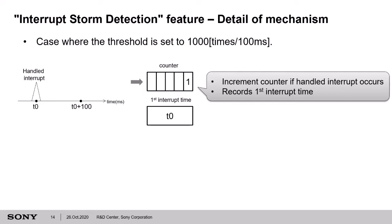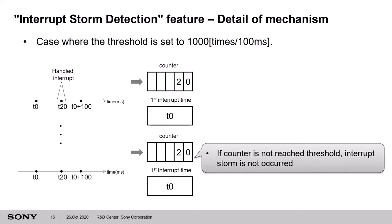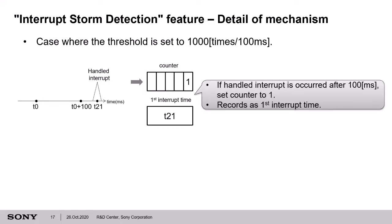In this case, the user sets 1000 as the threshold. The first handled interrupt occurs at T0. The counter is incremented and the time of the first interrupt is recorded as the starting point. If the next interrupt occurs within 100 ms, the counter is incremented. If the counter does not reach the threshold — for example, 7 times in 100 ms — the interrupt storm has not occurred, so this feature will not detect it as an interrupt storm. In another case, if 20 handled interrupts occur per 100 ms, it does not reach the threshold, so this is not an interrupt storm. After that, the counter resets when the interrupt occurs again after T0 plus 100 ms.